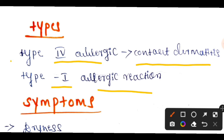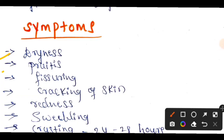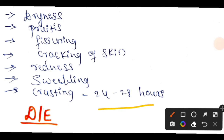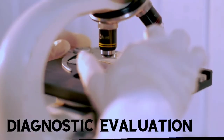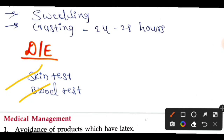To summarize the types: Type 4 contact dermatitis, Type 4 allergic reaction, and anaphylaxis — please watch the anaphylaxis video if you haven't seen it. The symptoms of latex allergy include redness, pruritus (itching) caused by histamines, fissuring and cracking of the skin, swelling, and crusting.